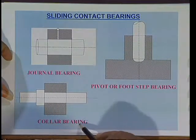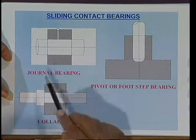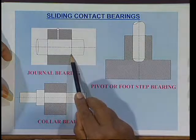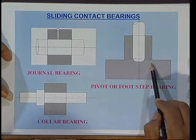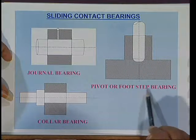Here you can see a collar bearing having only one collar, and a journal bearing which supports the load in the radial direction. Here is a shaft that is vertical and ends in the bearing itself — that is a pivot or footstep bearing. These sliding contact bearings are generally used for higher ratings. The noise compared to ball bearings is very less, but the friction is somewhat more compared to ball or roller bearings. These are the second type of mechanical features of motors.